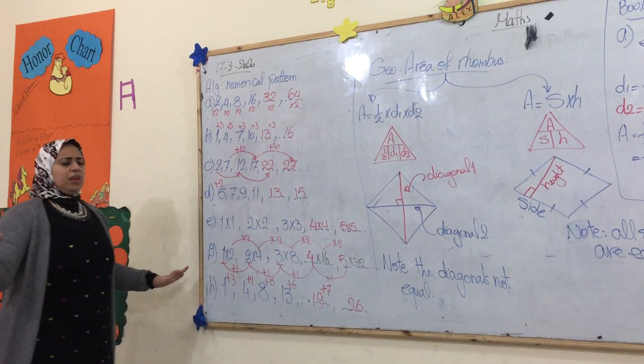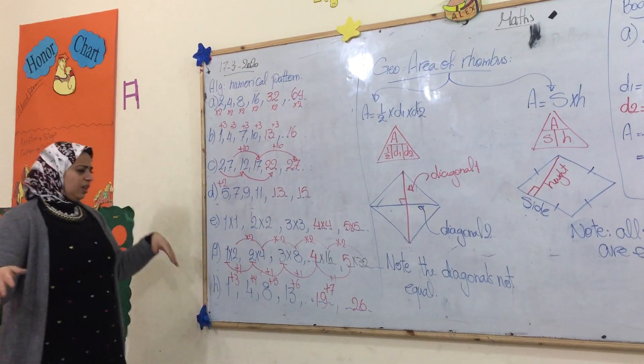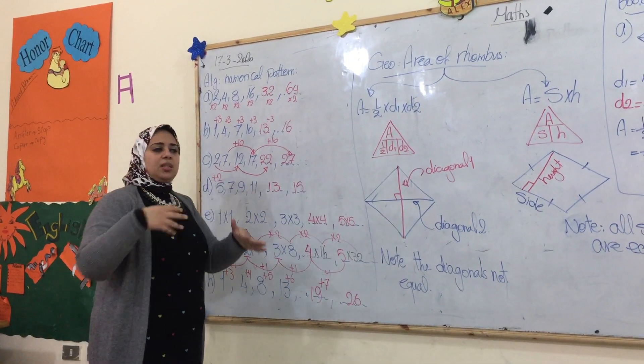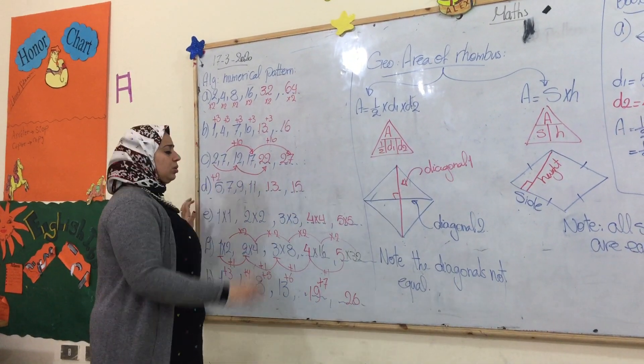If we start from the 8th number, the even number sequence would be: 2, 4, 6, 8, 10 and so on.